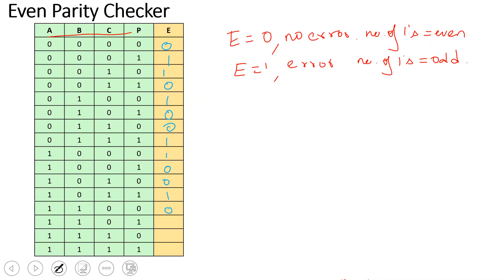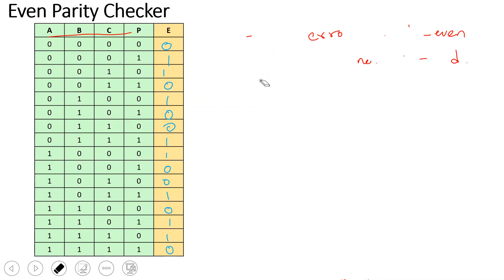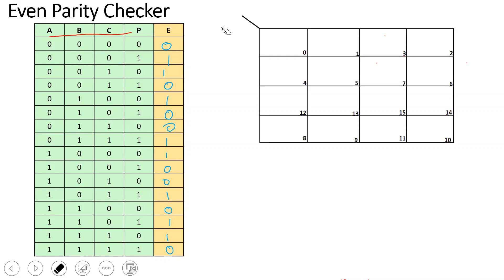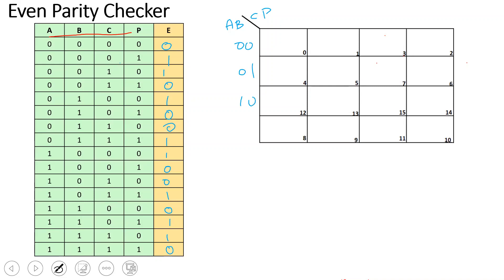I fill in the remaining table values. Now I need to find the Boolean expression from the truth table. I will use a K-map to simplify the expression. Let me erase this and set up the K-map.